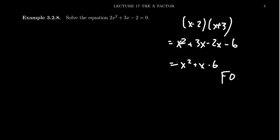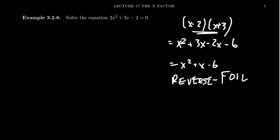And this is what we typically refer to as the FOIL method. The thing is, if I gave you x squared plus x minus six and I had to factor that, we have to essentially reverse this FOIL method to get back the factorization.